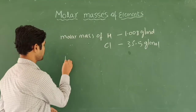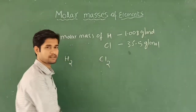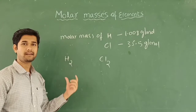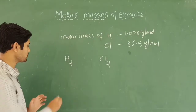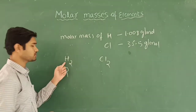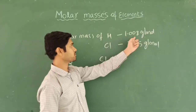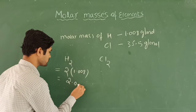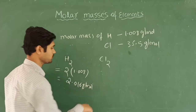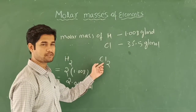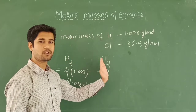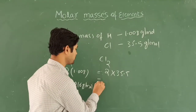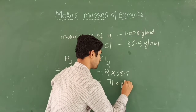Elements also exist in molecular form, such as hydrogen gas (H₂) and chlorine gas (Cl₂). The molar mass of a molecule of an element is found by multiplying the molar mass of one atom by the number of atoms joined. For H₂, there are 2 atoms, so molar mass = 2 × 1.008 = 2.016 gram per mole. For Cl₂, there are 2 atoms, so molar mass = 2 × 35.5 = 71.0 gram per mole.